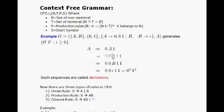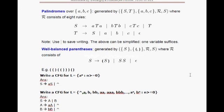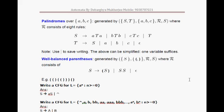Hello students, welcome back to our class on Automata. In our last class we discussed context-free grammar or CFG, including the formal definition and how it works with examples. In today's class we are going to extend that discussion. Most context-free grammars fall into two parts: one is the palindrome type and another is the well-balanced parenthesis problem.